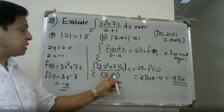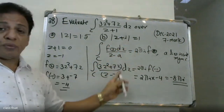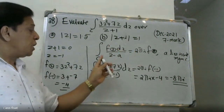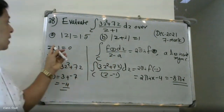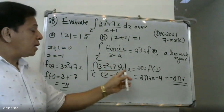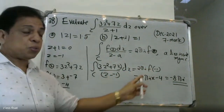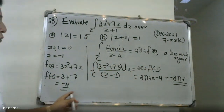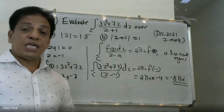Minus one lies inside the region |z+i| = 1.5. F of minus one is calculated: the value is minus four. Therefore the value of the final answer for this first case is minus eight times two pi i, which equals 2πi times minus four.